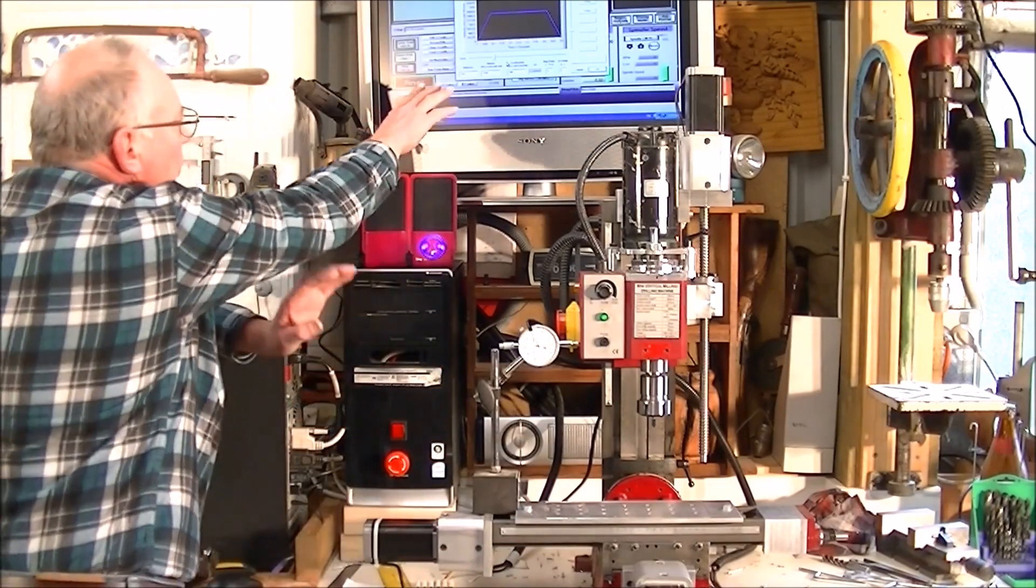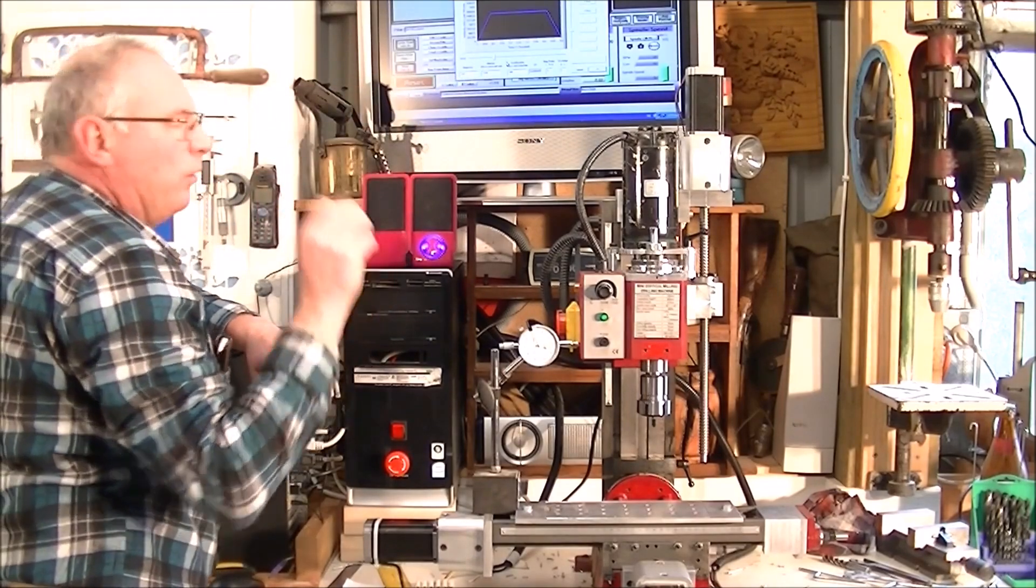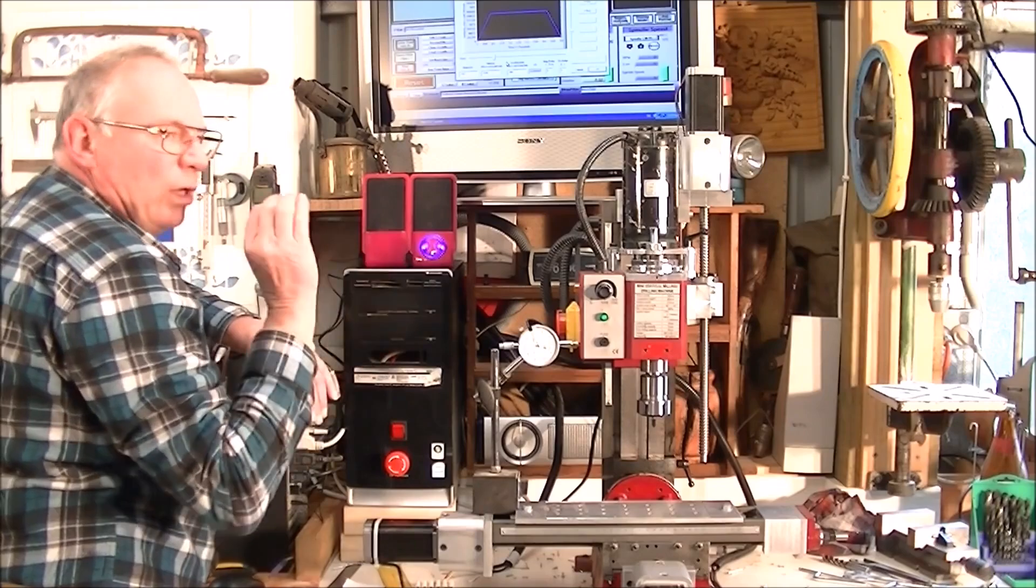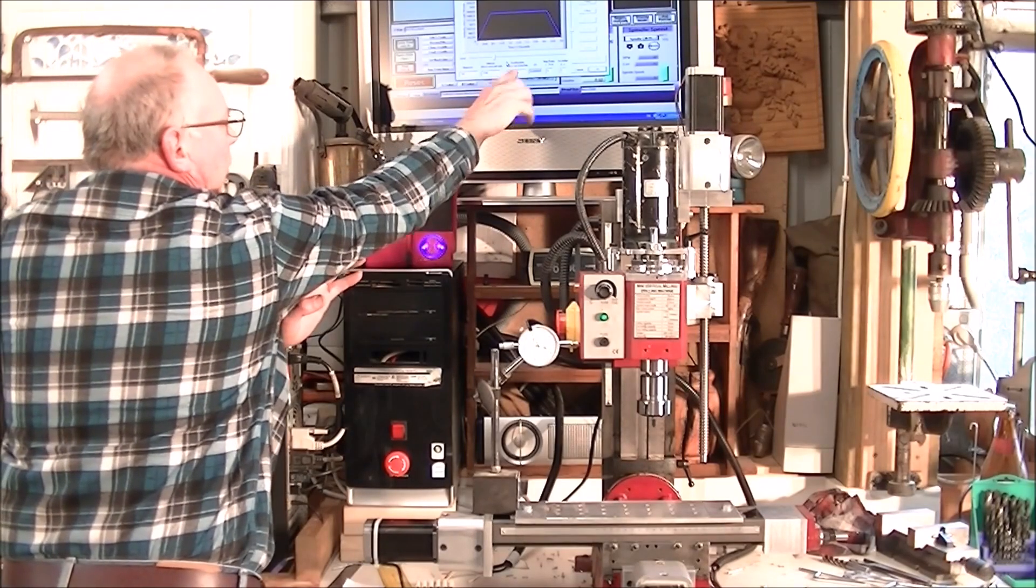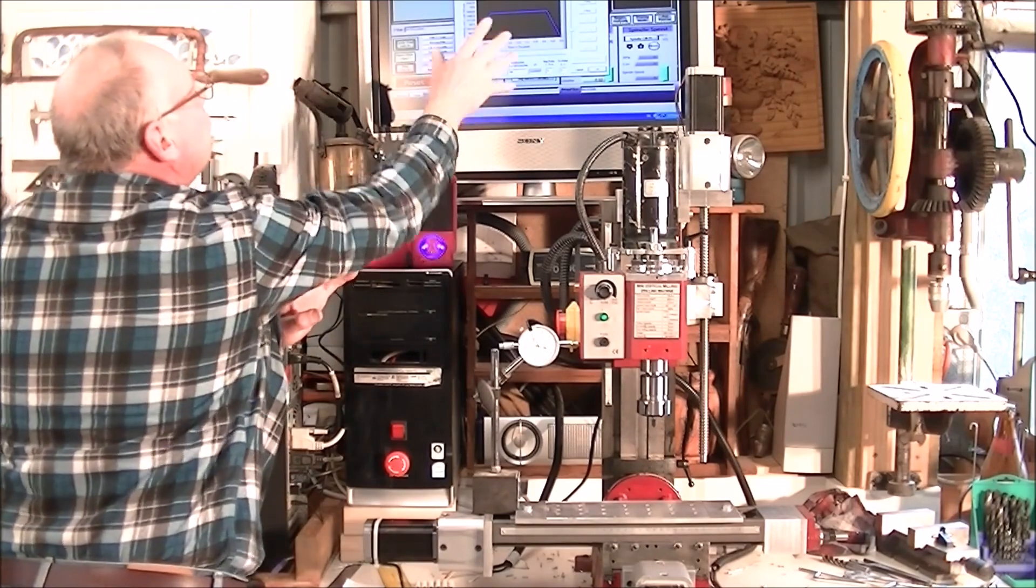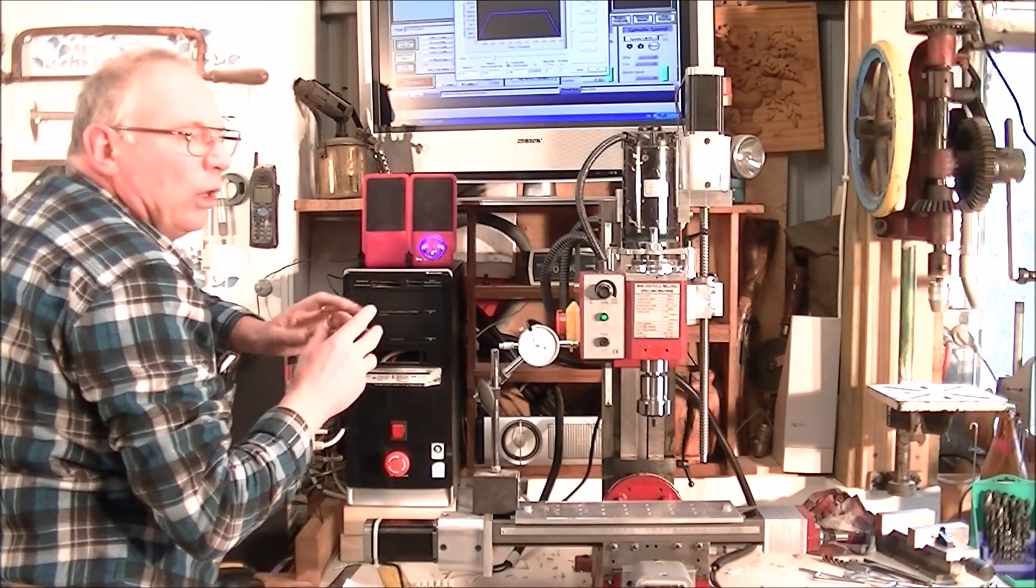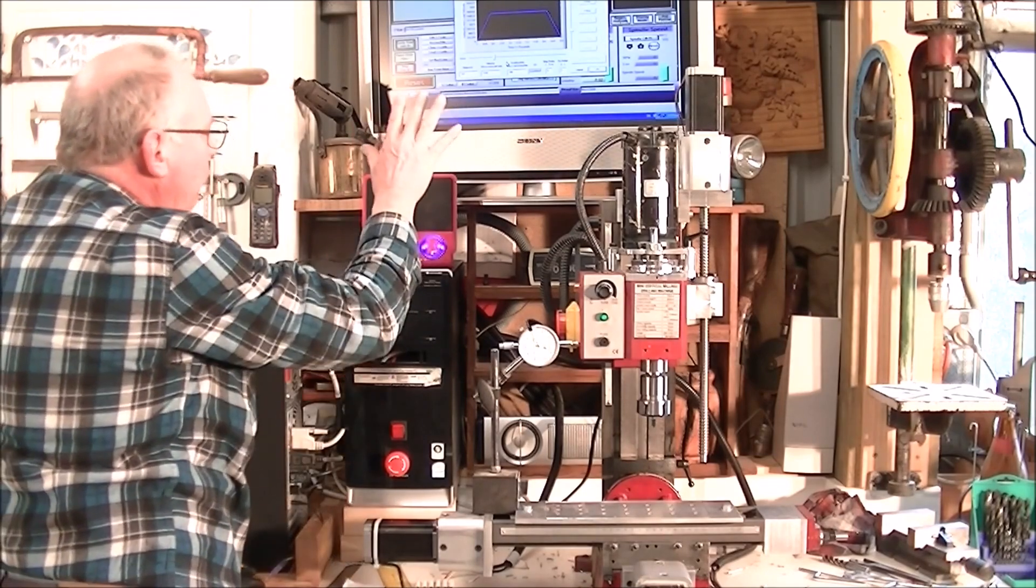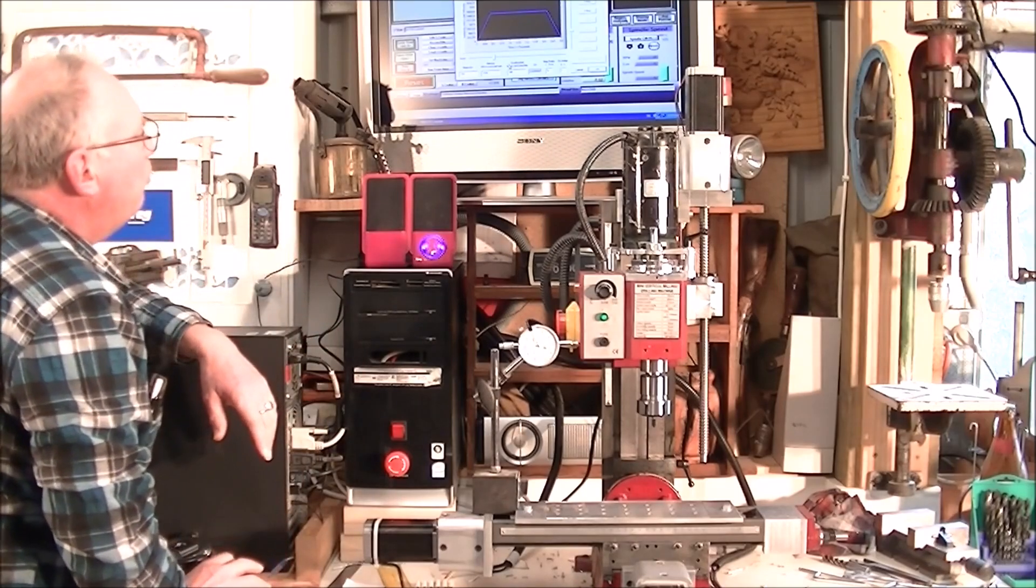That means this figure here, steps per, is going to be the same for each axis. Acceleration I normally find 300 is fine, velocity 1500 fine. You can play around with those if you like, but I normally find those fine for a standard type of machine.